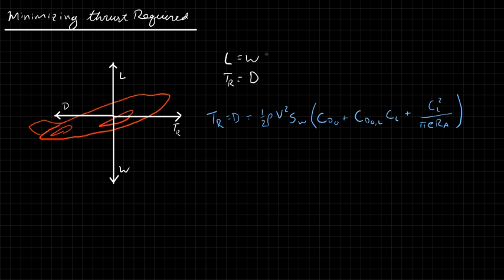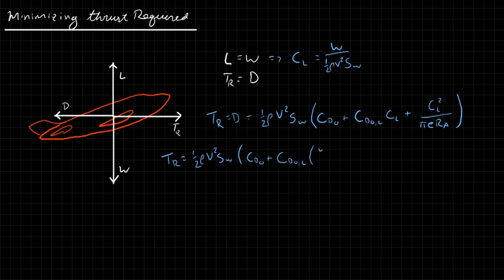Because lift equals weight, the lift coefficient C_L equals weight divided by one-half rho v-squared S_w. Substituting that relationship in, thrust required becomes one-half rho v-squared S_w times C_D0, plus C_D0L times weight divided by one-half rho v-squared S_w, plus one over (pi e RA) times the quantity weight divided by one-half rho v-squared S_w, squared.